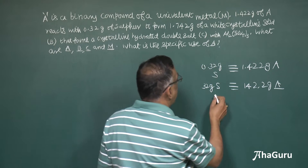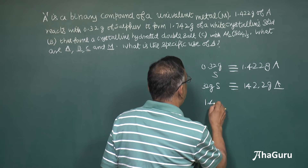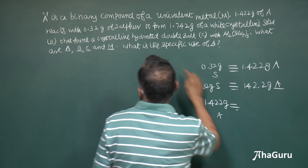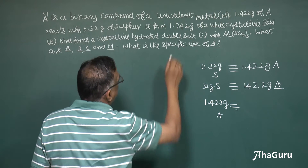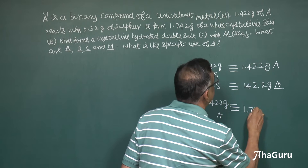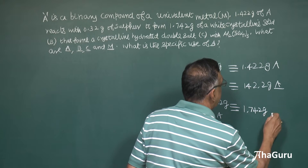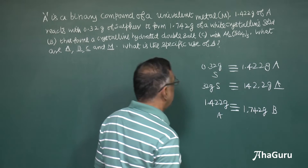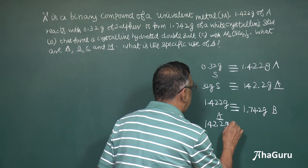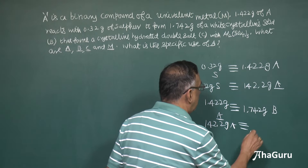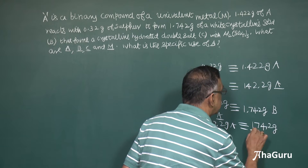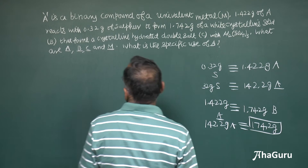So 1.422 grams of A, according to the information given, forms 1.742 grams of the white crystalline solid B. Therefore, 142.2 grams of A will correspond to 174.2 grams of the white crystalline solid B.